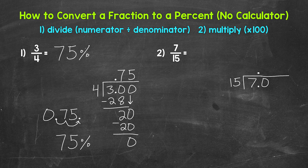I'm going to extend the division bar here and bring the decimal straight up. Now we can think of this as 70 divided by 15. How many whole groups of 15 in 70? Well, 4 — that gets us to 60. Now we multiply: 4 times 15 is 60. Subtract: 70 minus 60 gives us 10.